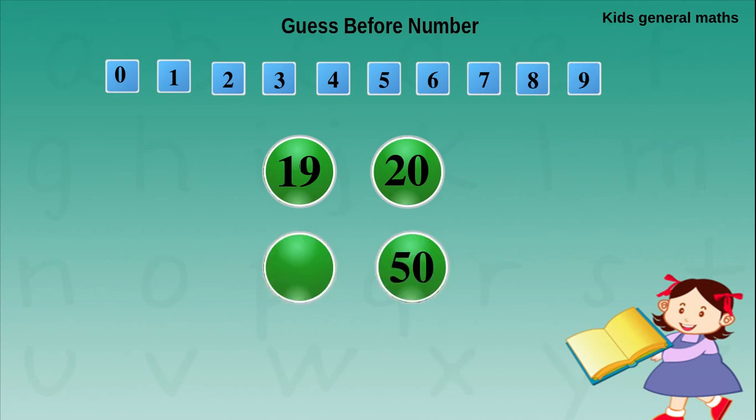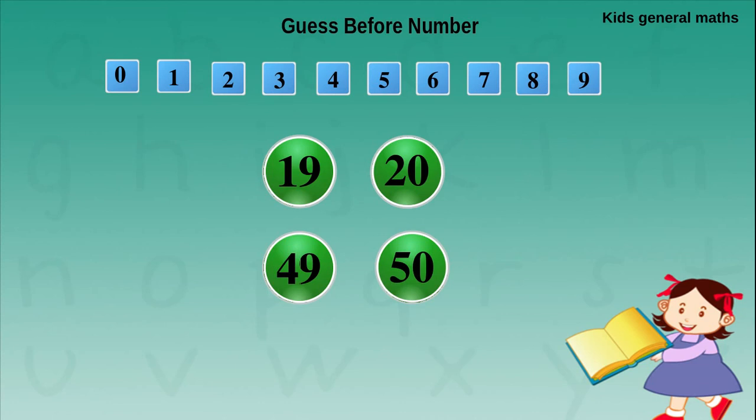Next they are given 50. For 0 we are going to write it as 9. For 5 we are going to find the before number — before 5 is 4. So before 50 is 49. Next they are given 70. For 0 we write it as 9. For 7 we find the before number — before 7 is 6. So before 70 is 69.